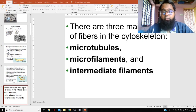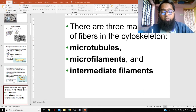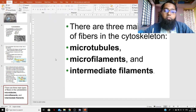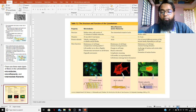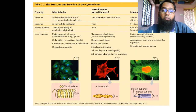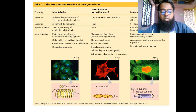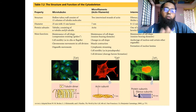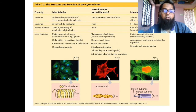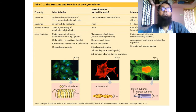There are three main types of cytoskeleton: microtubules, microfilaments, and intermediate filaments. On screen is a comparison table showing differences among these three types. The properties compared are structure, diameter, protein subunits, and main function. On the left side are the properties, and the three types are compared across columns.